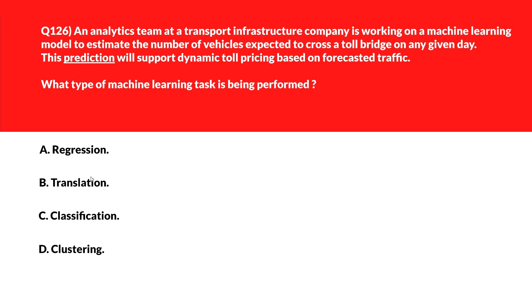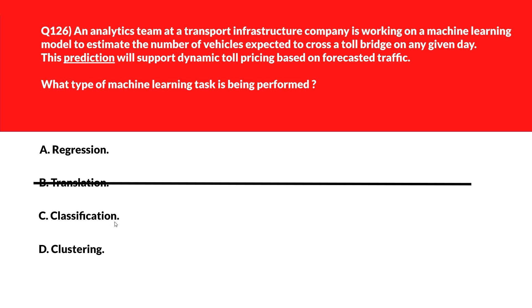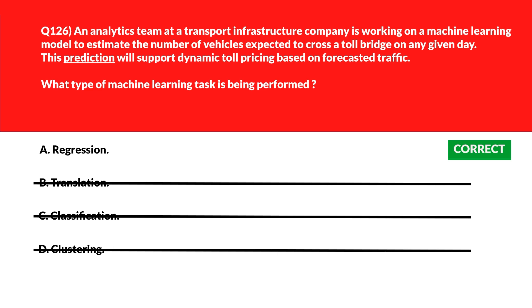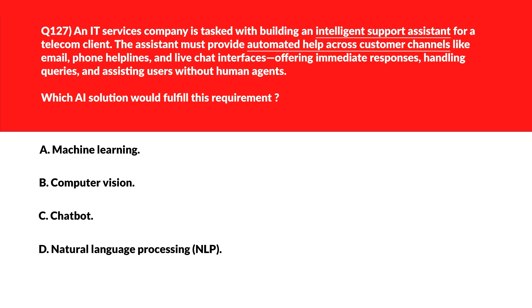Option C is Classification — classification assigns labels or categories, not continuous numeric predictions, so we'll delete this. Option D is Clustering — clustering finds patterns in unlabeled data and is not used to predict vehicle count — wrong choice. We'll lock option A, Regression, as the right answer.